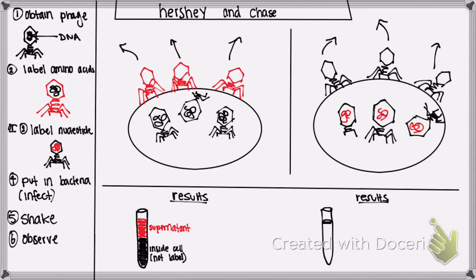So, they took the results from the second cell that they infected, and saw that the labeled nucleotides were inside the cell, or the labeled DNA is inside the cell. And, on the outside, you just have the normal phages in the supernatant.